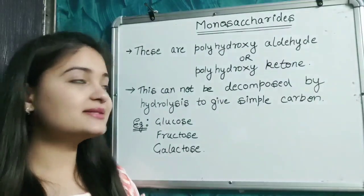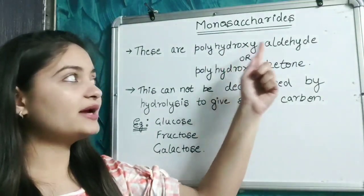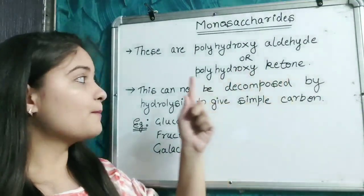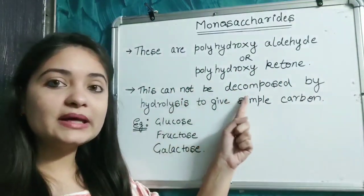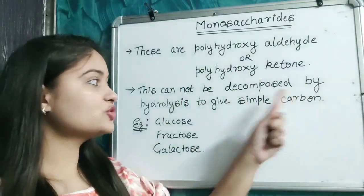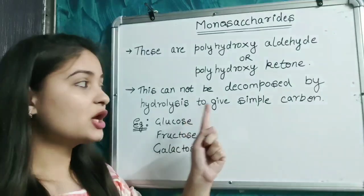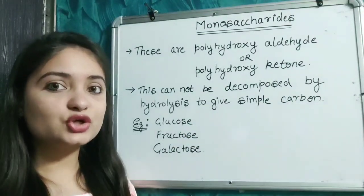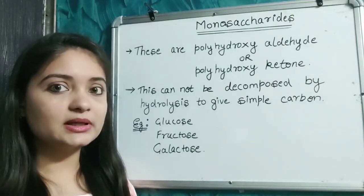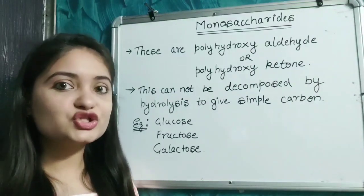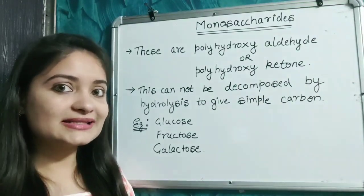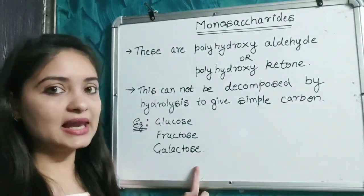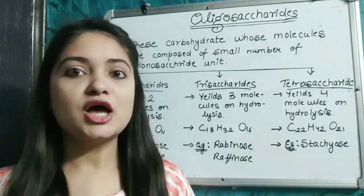Monosaccharides are polyhydroxy aldehydes or polyhydroxy ketones. Monosaccharides cannot be decomposed by hydrolysis to give simpler carbohydrates — that means hydrolysis is not possible in the case of monosaccharides. Examples include glucose, fructose, and galactose.